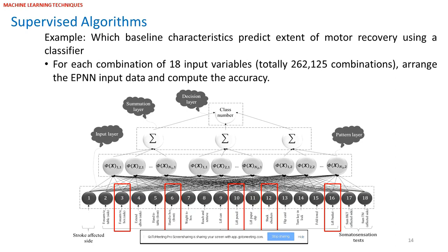We know that not all the predictors help in correct prediction, and on the other hand our classifier is advanced and able to find highly nonlinear relationships among the predictors. The predictors include stroke-affected size, 15 Wolf Motor Function Test values, and some sensation test values — totaling 18. We trained and tested our classifier using all possible combinations of these 18 input values, totaling about 262,000 combinations. For that we needed Ohio Supercomputer facilities to run our algorithms. We arranged the data, ran the EPNN, and using repeated random sampling found the accuracies of each combination.